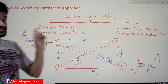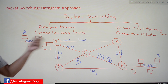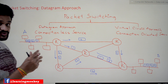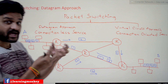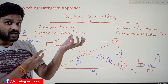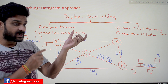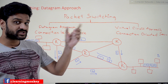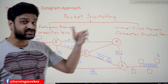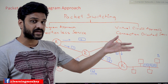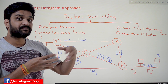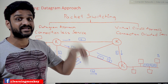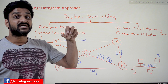Whenever a network layer packet is received at the router, the router's job is to use the header fields of the network layer packet — specifically the source address and destination address fields — to decide where the packet has to be switched.